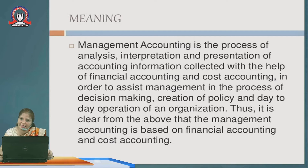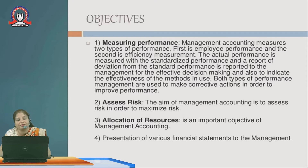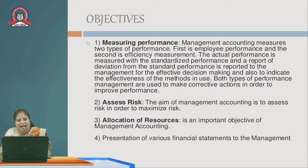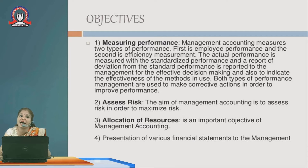Management Accounting is based on Financial Accounting and Cost Accounting. The objective of Management Accounting is to measure two types of performance: Employee Performance and Efficiency Measurement. The actual performance is measured against standardized performance, and a report of deviations from the standard is reported to management for effective decision making and to indicate the effectiveness of the methods in use.